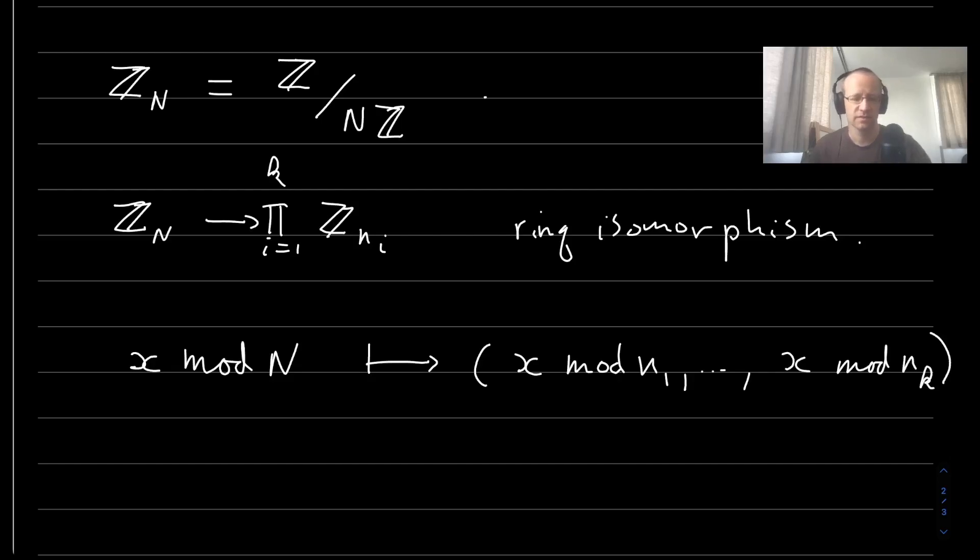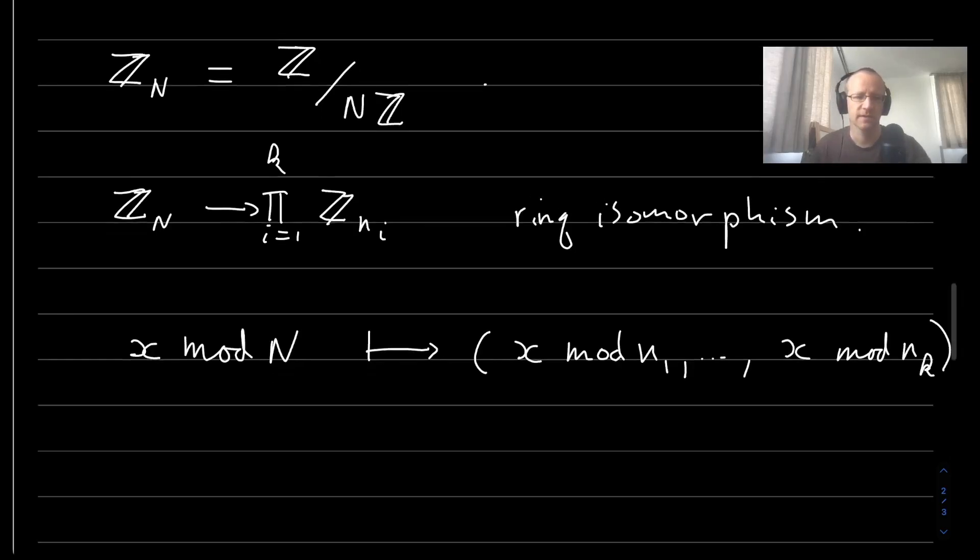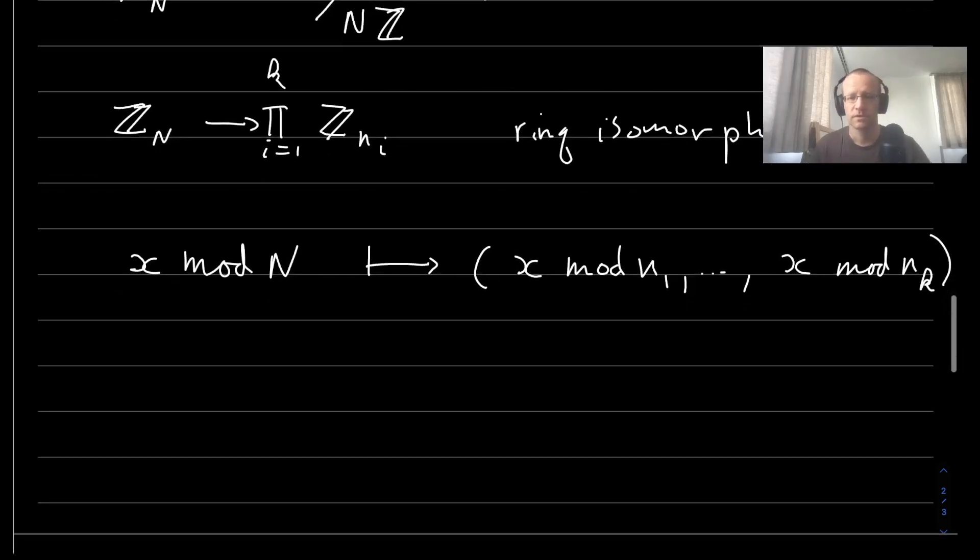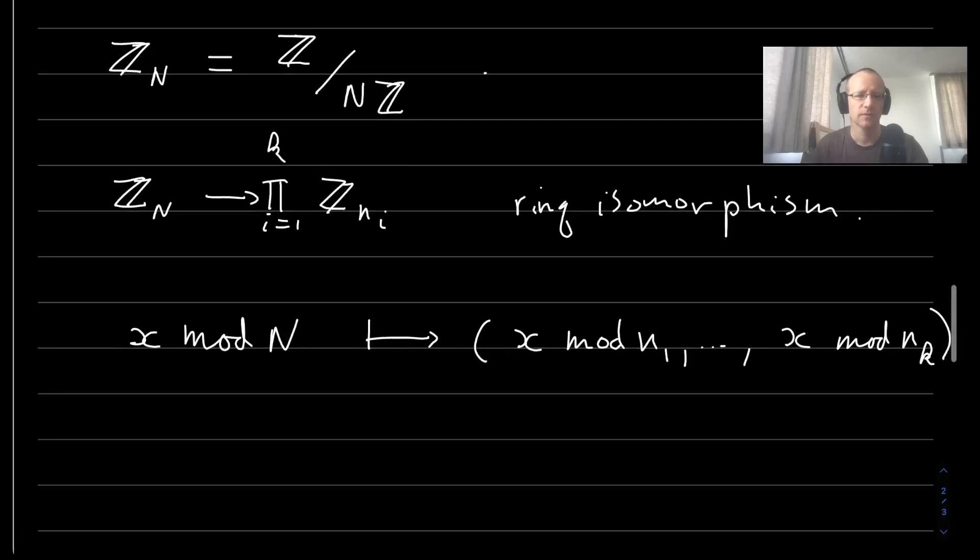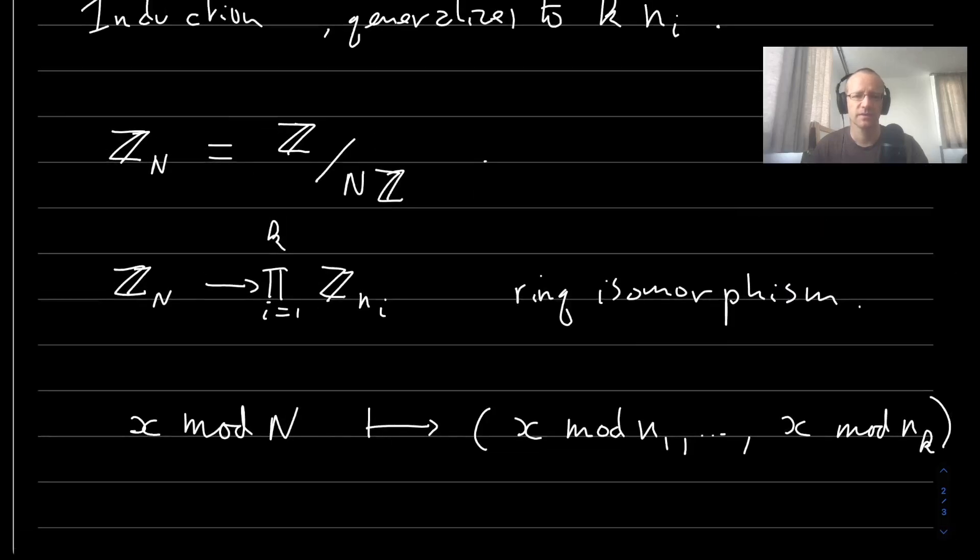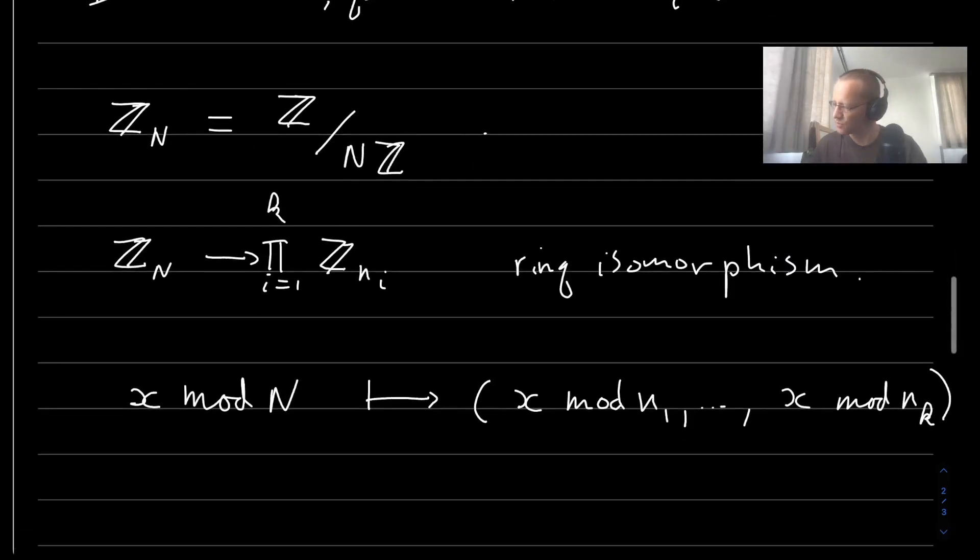And then by the Chinese remainder theorem, you can see that this is surjective. And then moreover, because we have the same number of elements, this is bijective. And then we can check that the operations indeed are preserved by the map. So this gives a ring isomorphism.